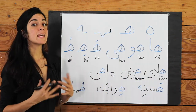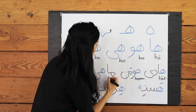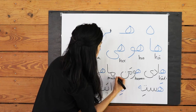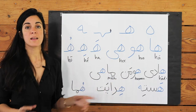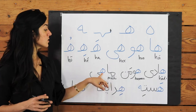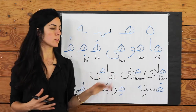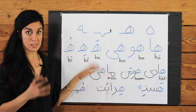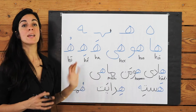Mahi — fish. Here you can see that even though the H comes in the middle of the word, it doesn't join up with the A, so it still looks like the beginning-of-word form because it's at the beginning of this grouping. Mahi.